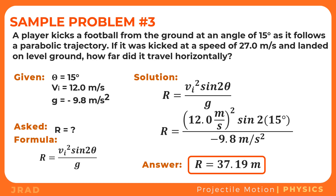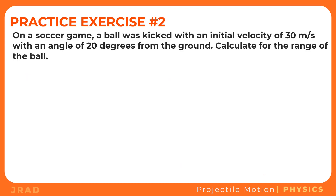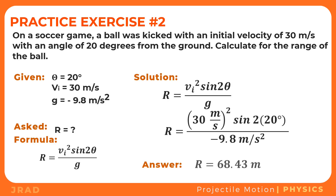Now your turn. On a soccer game, a ball was kicked with an initial velocity of 30 meters per second at an angle of 20 degrees from the ground. Calculate the range of the ball. Using the same process, the answer is 68.43 meters. Did you get it right?